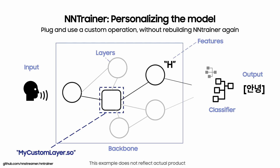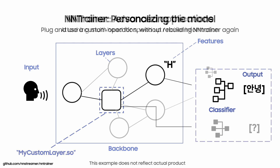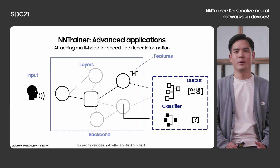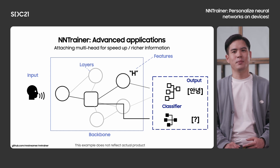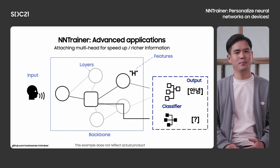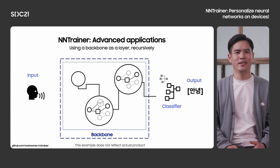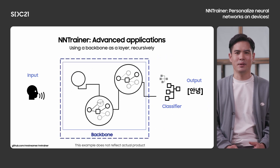With those basic functionalities, you can construct a trainable model for your needs. For example, you can try attaching multi-heads for boosting speed or richer information. Or because a backbone is treated as a layer, you can recursively stack up backbones to make a more complex model — for example, a ResNet block can be defined as a backbone layer.